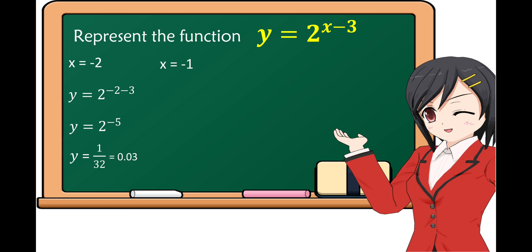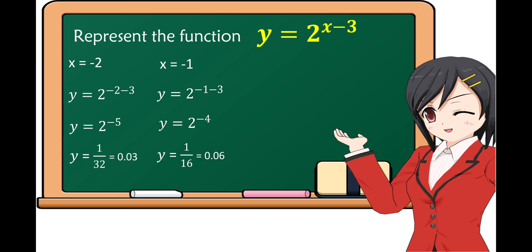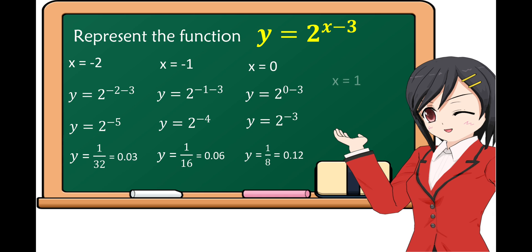If x is equal to negative 1, we have y is equal to 2 raised to negative 4, or 1 over 2 raised to 4, which is equal to 1 over 16, or 0.06. If x is equal to 0, y is equal to 2 raised to negative 3, or 1 over 2 cubed, which is equal to 1 over 8, or 0.12. If x is equal to positive 1, y is equal to 2 raised to negative 2, or 1 over 4, which is equal to 0.25.